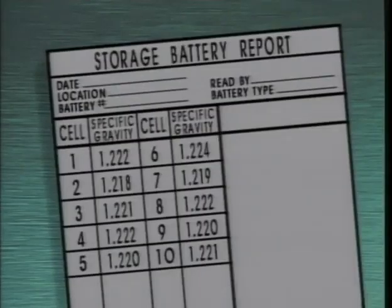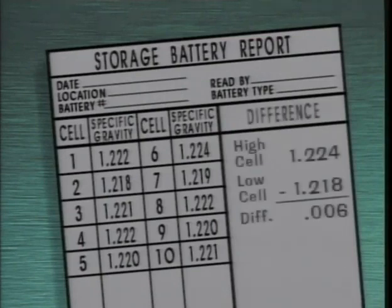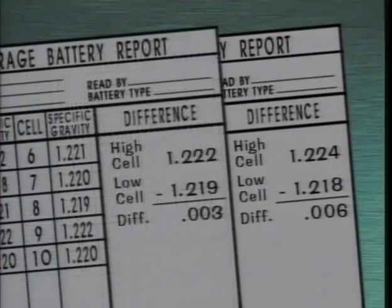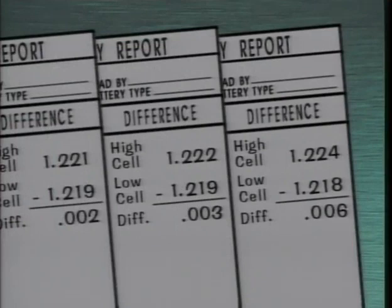After cell specific gravities are corrected for temperature, they can be evaluated in several ways. One way is to identify the highest and lowest cell specific gravities and determine the difference between them. The difference is compared to high and low cell specific gravities from previous tests. A noticeable increase in the differences may mean an equalizing charge is needed to raise the specific gravity of the weaker cells.